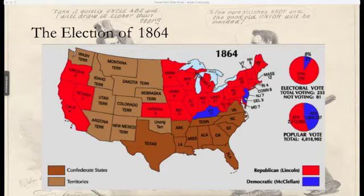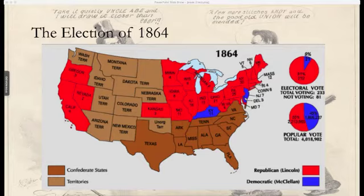Johnson was from Tennessee, and he had owned slaves, and had served in the State House and State Senate before getting elected to governor. He was serving as one of Tennessee's senators when the state seceded, but he was the only senator from the South not to resign his seat. By 1862, the Union Army had driven the Confederate Army out of Tennessee, and Lincoln appointed Johnson as the military governor of the conquered state.